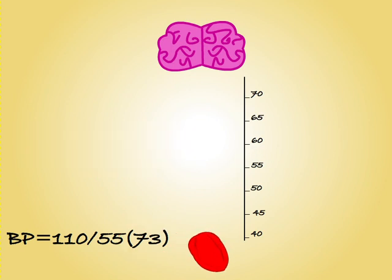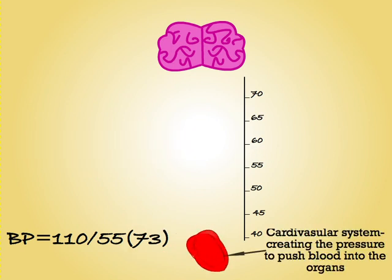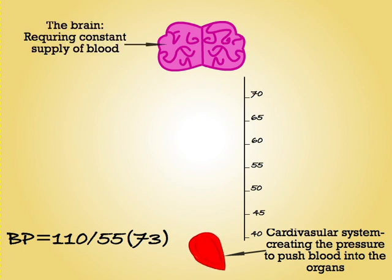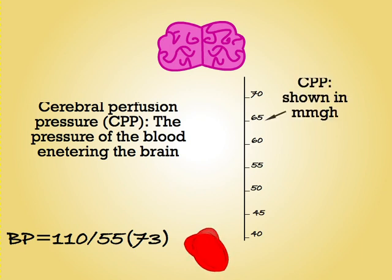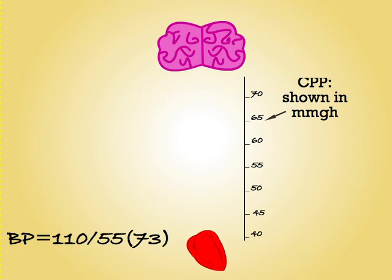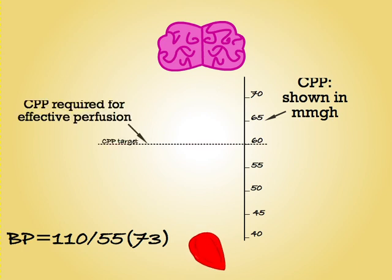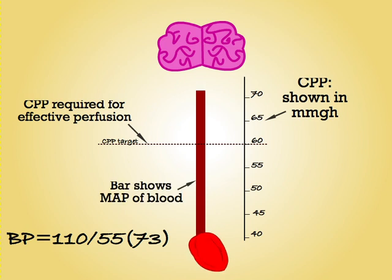At the bottom of the screen we see a heart representing the cardiovascular system and the blood pressure it can produce. At the top we see the brain, the organ we are trying to perfuse. The pressure of the blood reaching the brain is known as Cerebral Perfusion Pressure, or CPP, shown on the scale to the right. A CPP of 60 is generally considered acceptable. As we can see, the patient's current MAP of 73 would seem easily adequate to perfuse the brain.